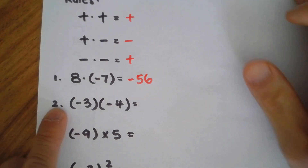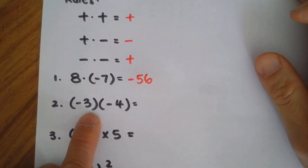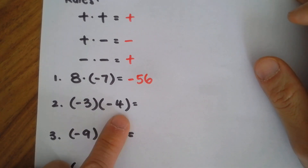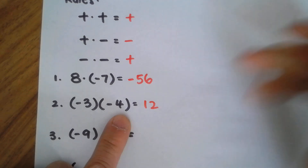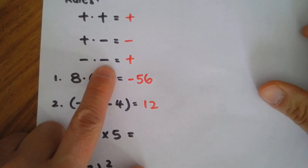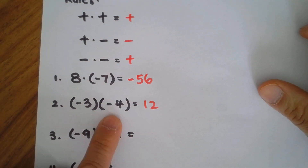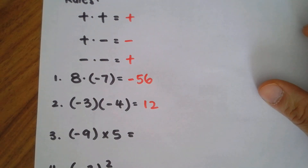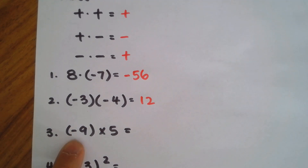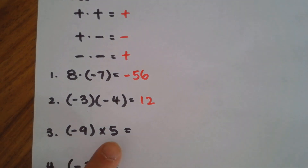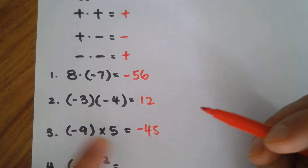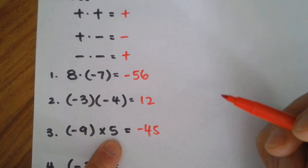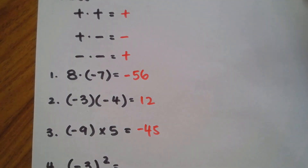Take a look at number two: negative three times negative four. That's going to be positive 12, because a negative times a negative gives you a positive. Over here, number three, you have negative nine times five, which is going to be negative 45, because that's negative times positive — that's a negative answer.